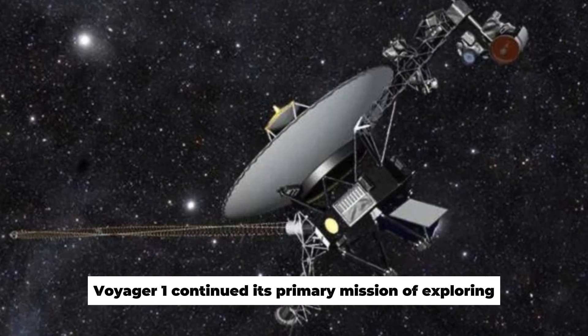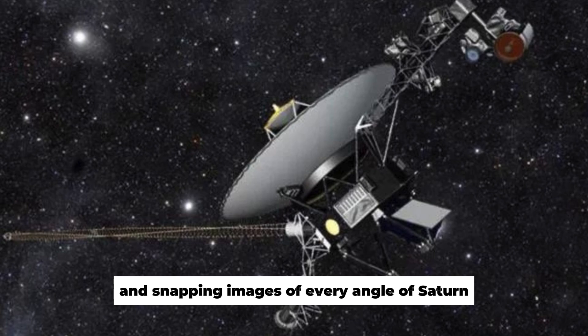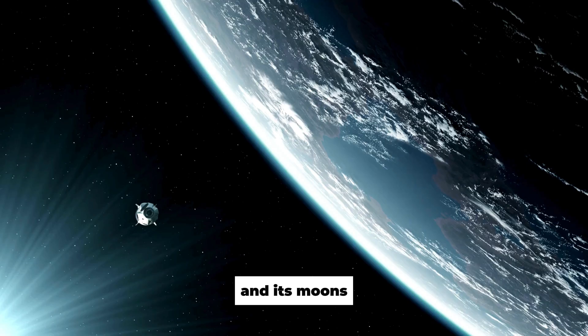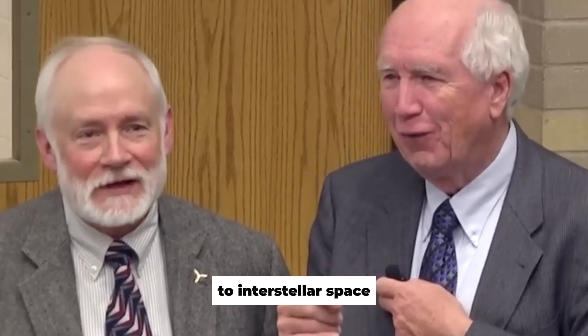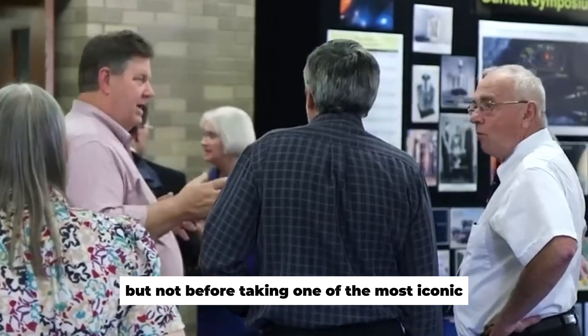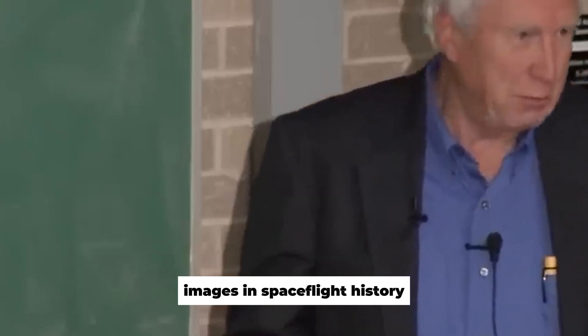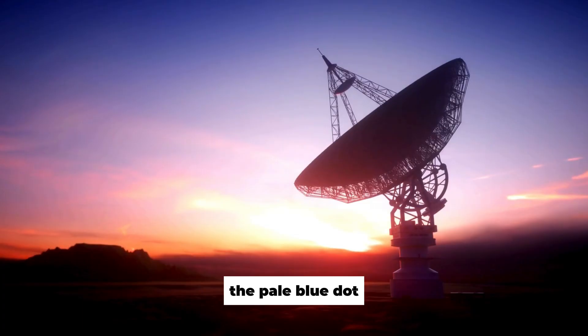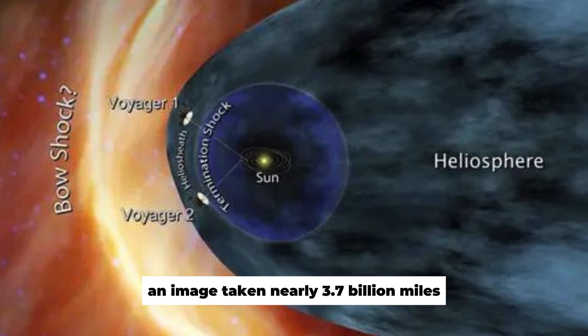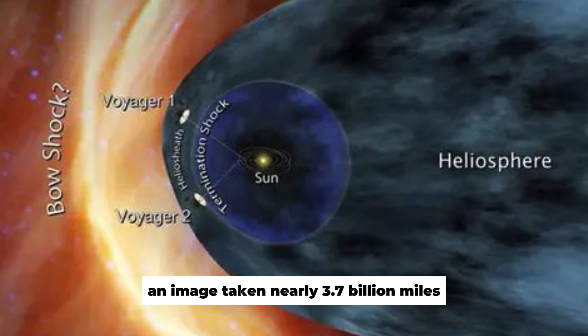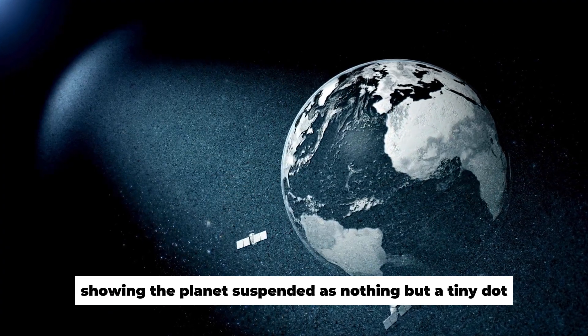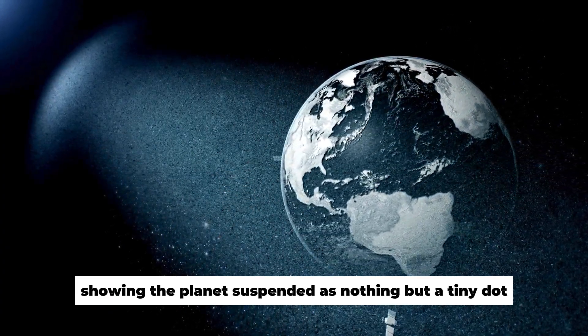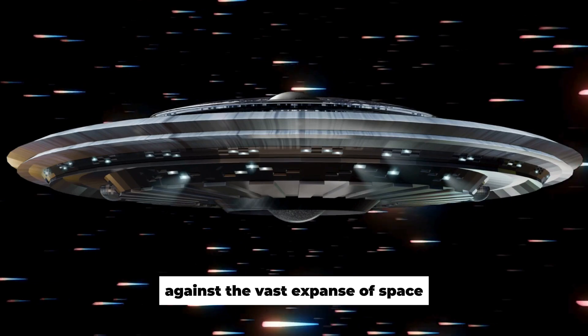Voyager 1 continued its primary mission of exploring and snapping images of every angle of Saturn and its moons till it was finally time to make its way to interstellar space, but not before taking one of the most iconic images in spaceflight history, the pale blue dot. An image taken nearly 3.7 billion miles or 6 billion kilometers away from Earth, showing the planet suspended as nothing but a tiny dot against the vast expanse of space.